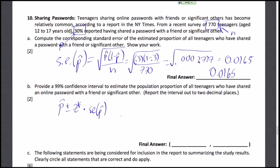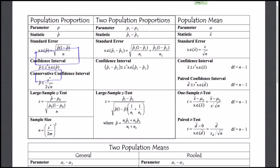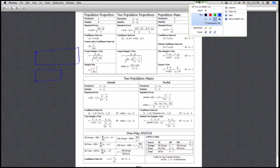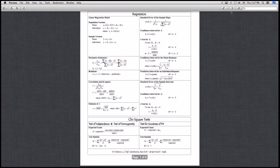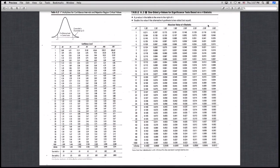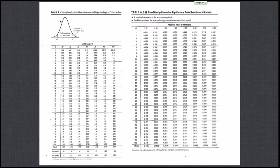We know z-star for 95% is typically 1.96 or 2. For 99% we aren't as familiar, so we can use the table to look it up. Going to the t-star multiplier table, Table A2, from the infinite degrees-of-freedom row we can get our z-star values. For the 99% confidence interval, that value is 2.576.